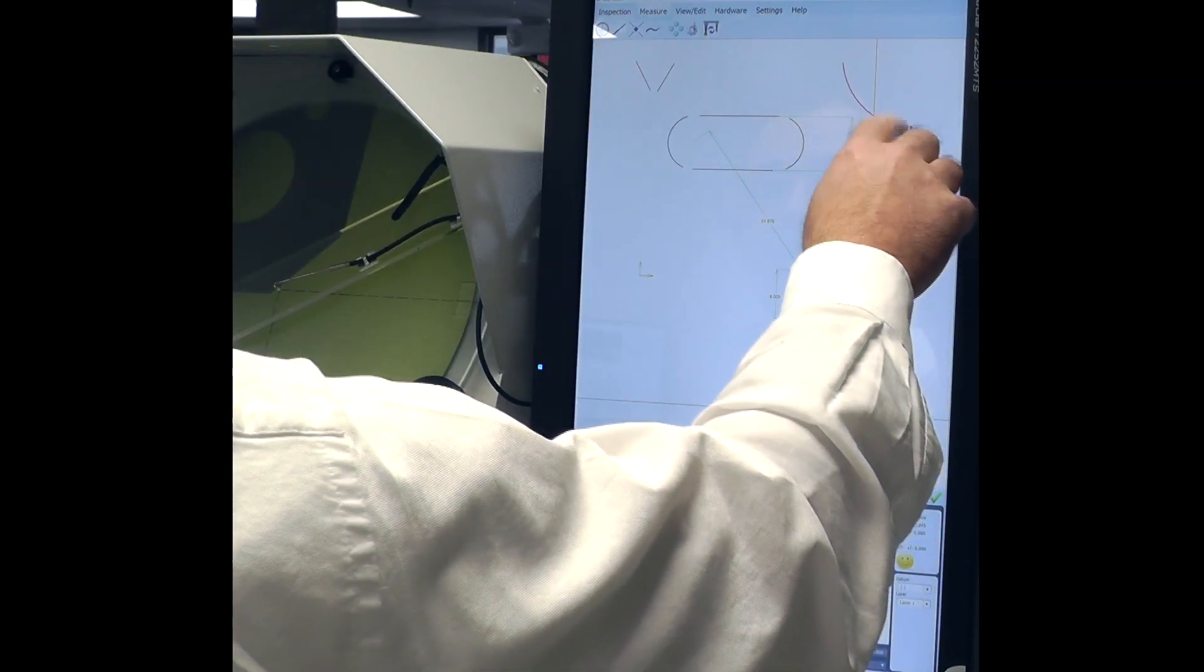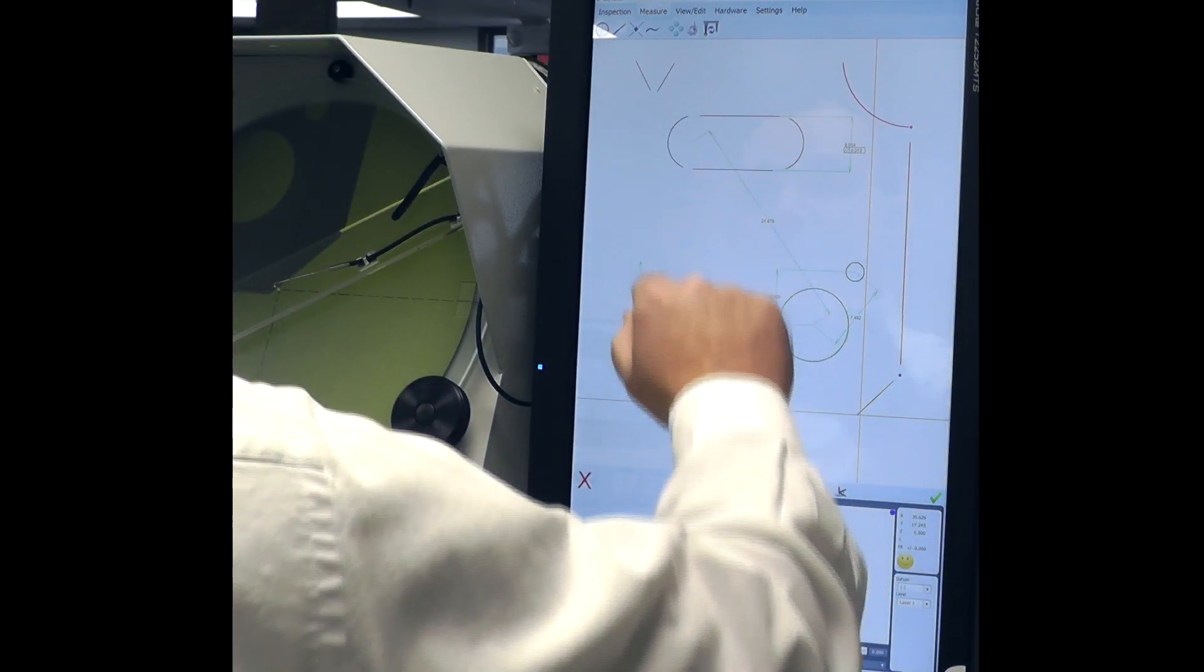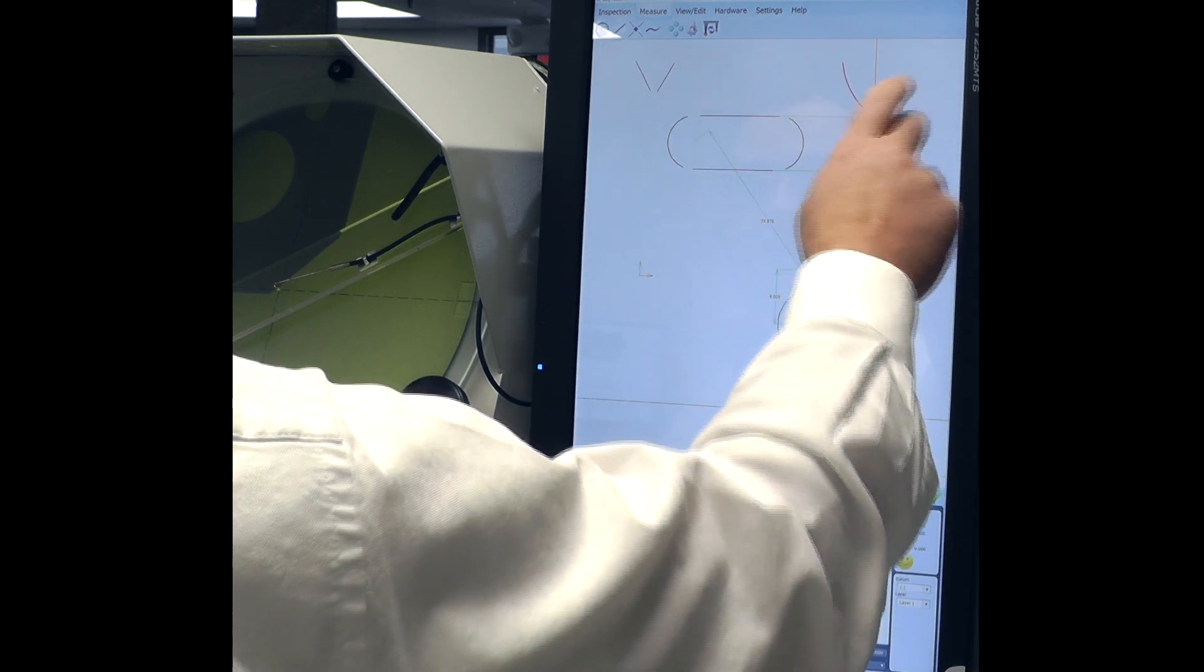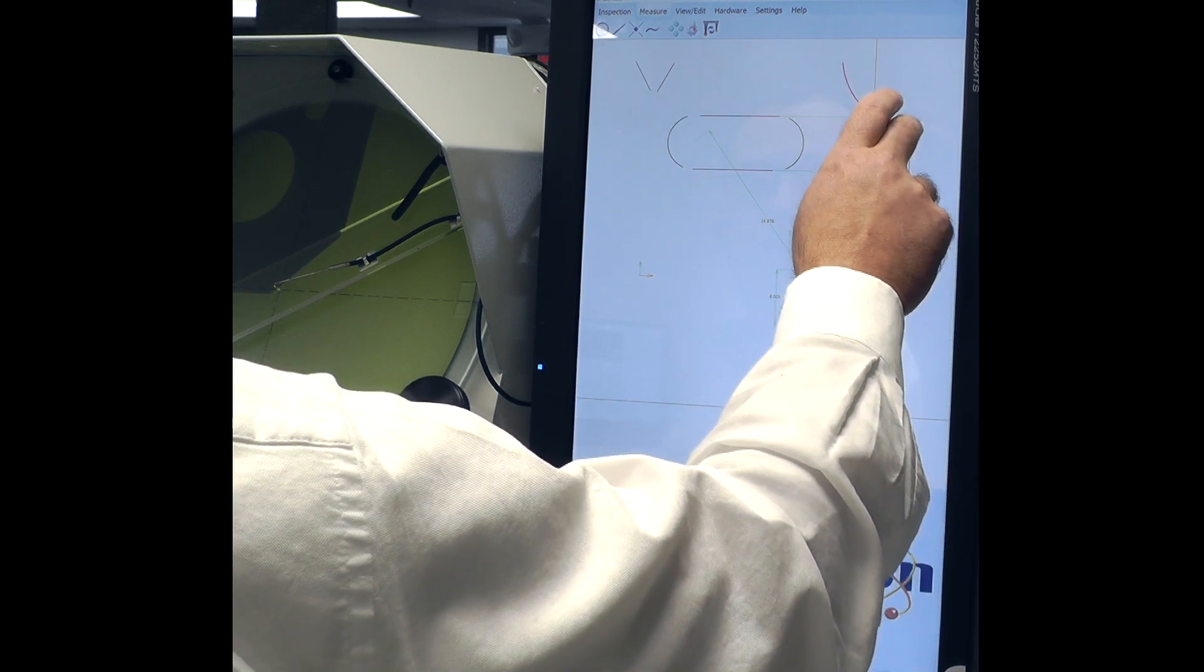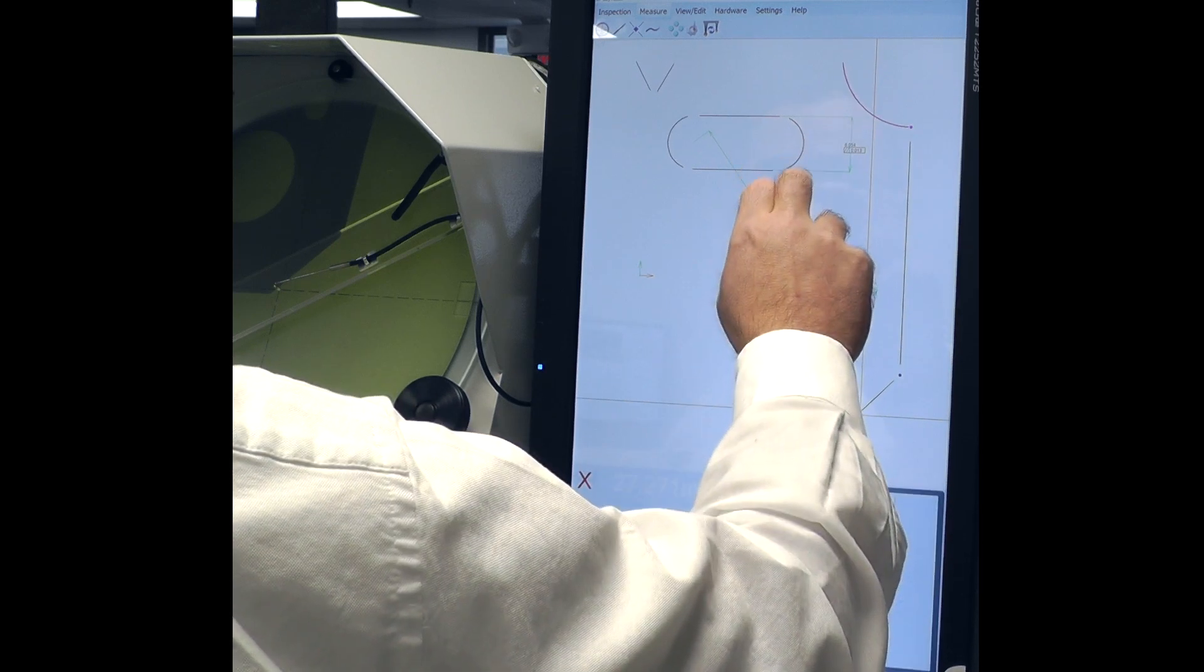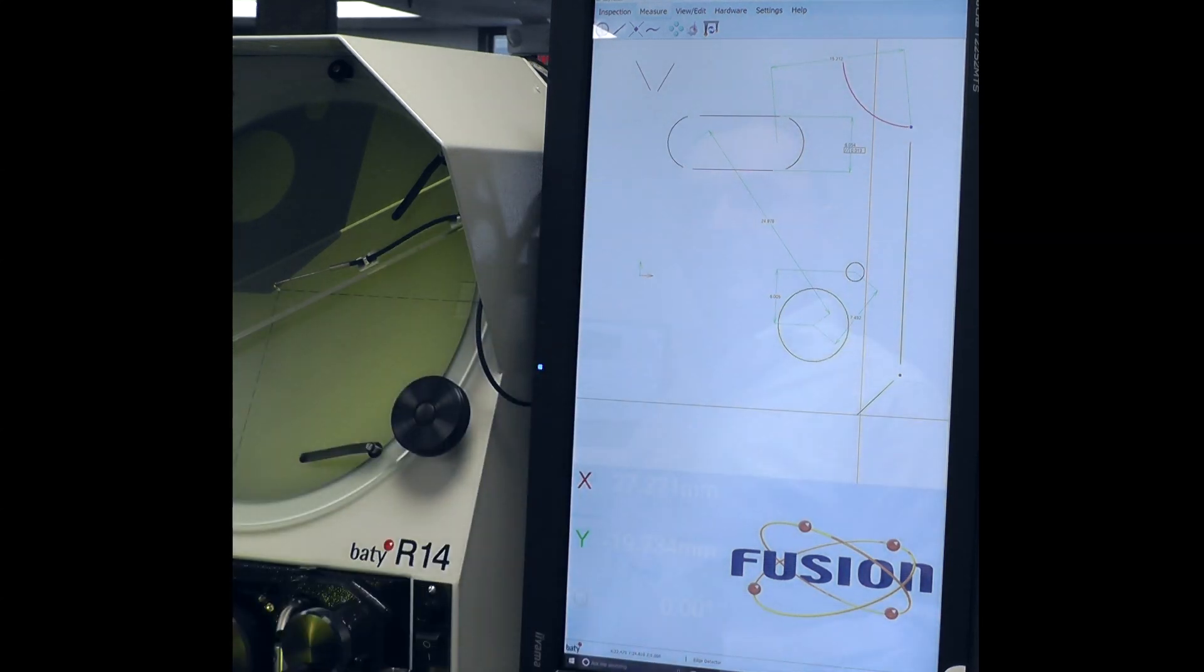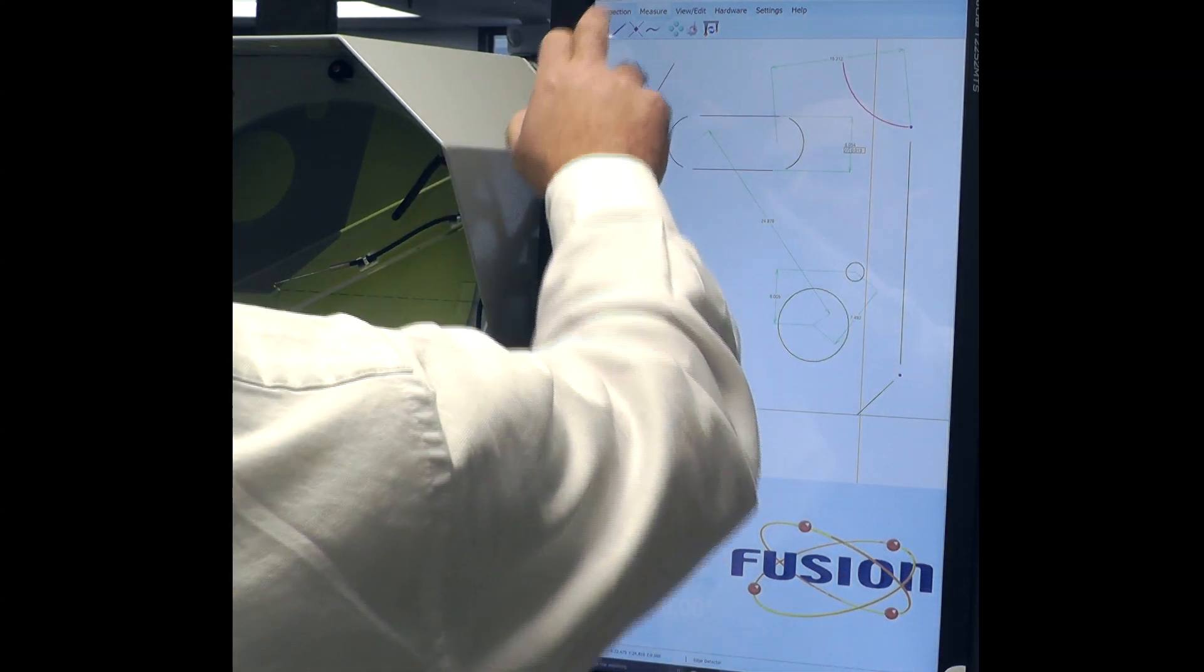For example, I can make a point and reference it over to the center of this arc quite easily just by selecting the point itself and then the arc and dimensioning it like so. I've done some more measurements here. Let's see what our report looks like.